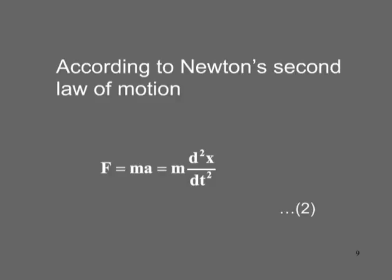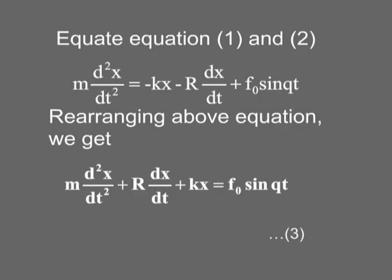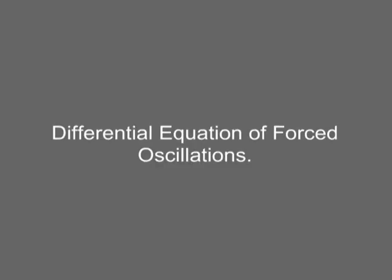Therefore this force equals the force stated by Newton's second law of motion. According to Newton's second law, F = m(d²x/dt²). Equating equations 1 and 2 we get m(d²x/dt²) = −kx − r(dx/dt) + F₀ sin(qt). Rearranging, we get m(d²x/dt²) + r(dx/dt) + kx = F₀ sin(qt). This is equation 3, a second-order linear inhomogeneous differential equation in x, called the differential equation of forced oscillations.